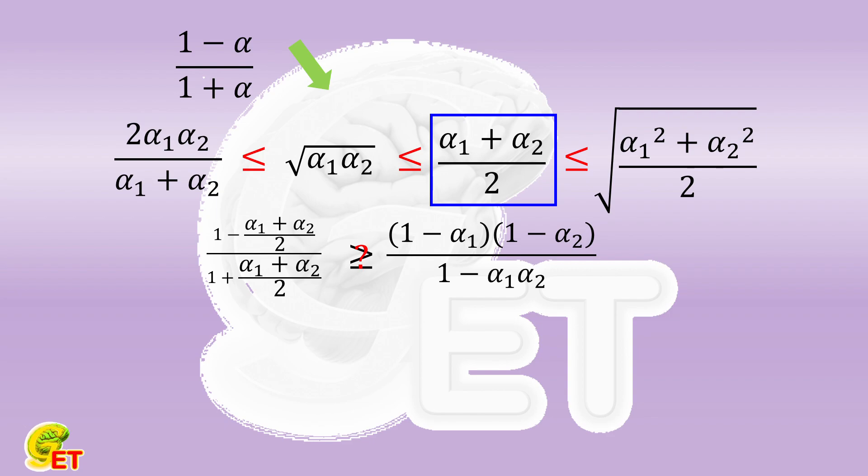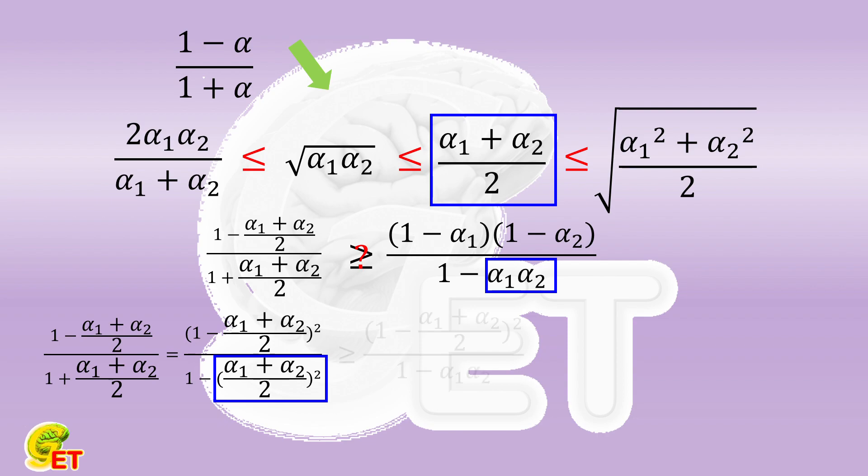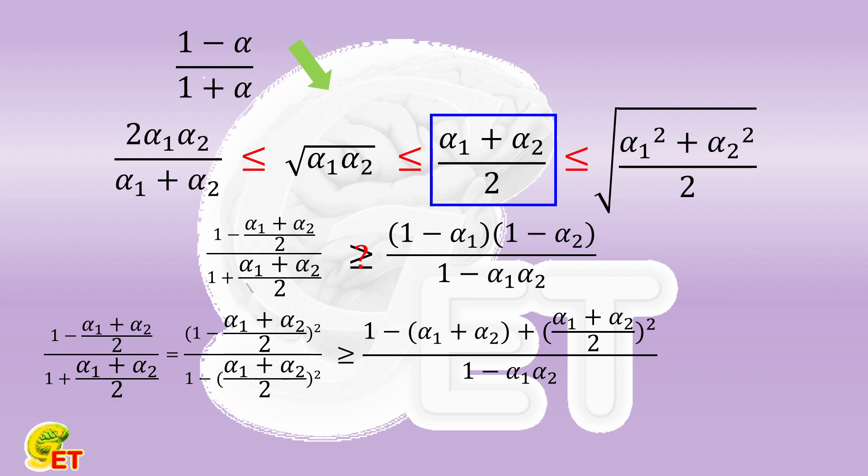And the proof is pretty straightforward. We first revert the left side of the inequality to the form of the square of the difference over the difference of the square. Let's take a look at the denominator first. Referring to the right side of the inequality, we replace the arithmetic mean with the geometric mean, and its value will not increase. We then expand the numerator again, and again replace the arithmetic mean with the geometric mean, and its value will still not increase. And this is exactly equal to the right side of the inequality. The proof is therefore done.